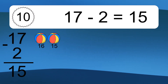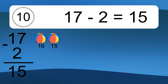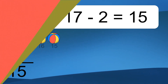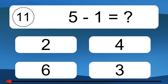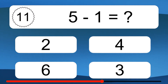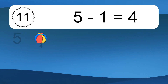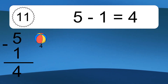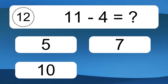5 minus 2 equals 15. Let's count it. 16, 15. 5 minus 1 equals what? 5 minus 1 equals 4. Let's count it. 4.